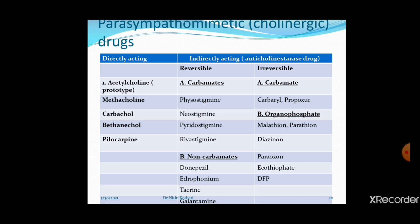In this session, we will discuss the different drugs which act upon the parasympathetic system. This is the classification of parasympathomimetic drugs, also called cholinergic drugs. Cholinergic drugs either act upon different muscarinic and nicotinic receptors directly, or they increase the duration of action of acetylcholine that has been released in the synaptic cleft.